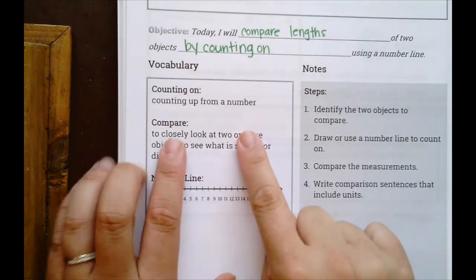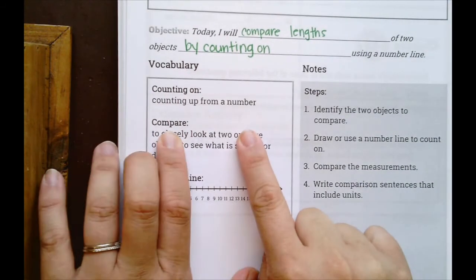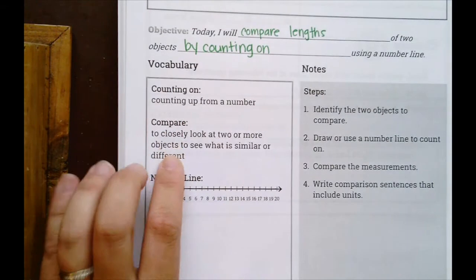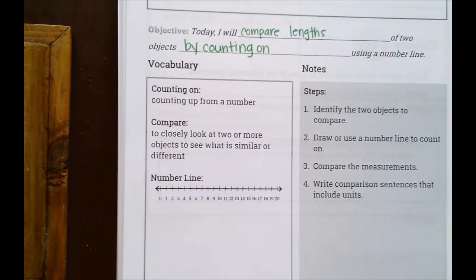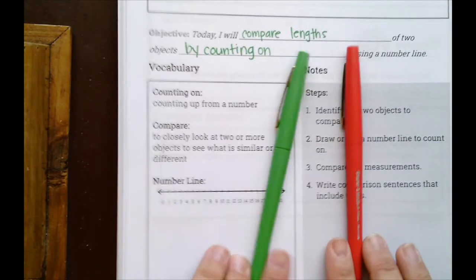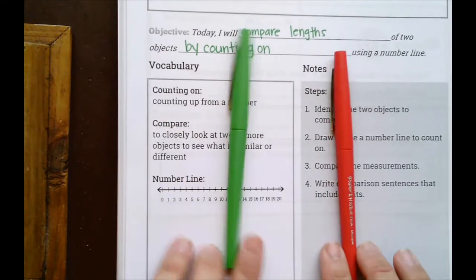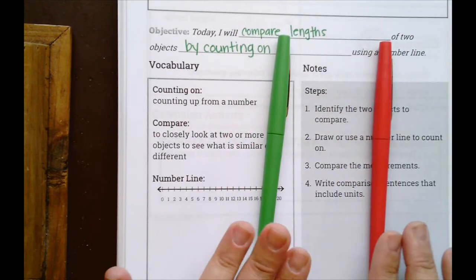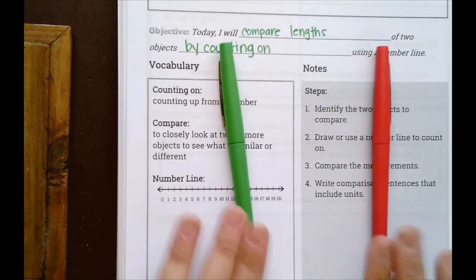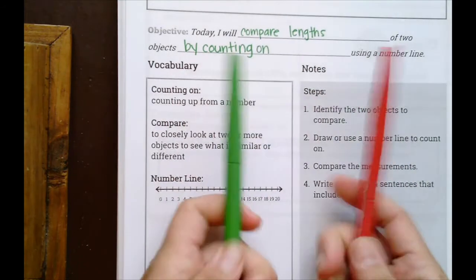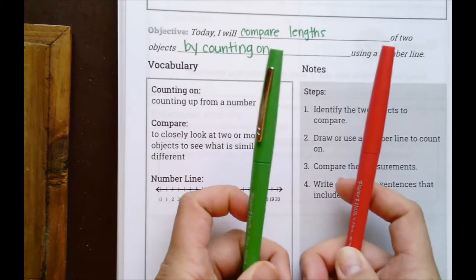The next vocabulary word is compare. The definition of compare means to closely look at two or more objects to see what is similar or different. So if you want to say I'm comparing these two markers, you can either say what is similar — they're both markers — or what is a difference: one's green and one's red. That's just physical attributes, physical differences and similarities.